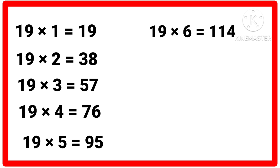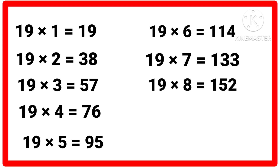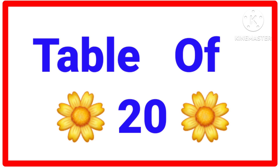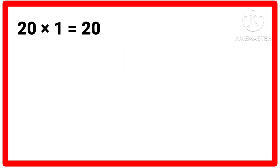Nineteen sixes are 114, nineteen sevens are 133, nineteen eights are 152, nineteen nines are 171, nineteen tens are 190.